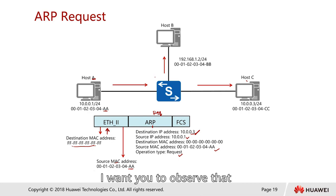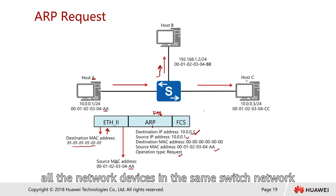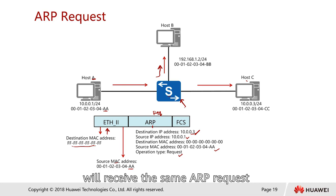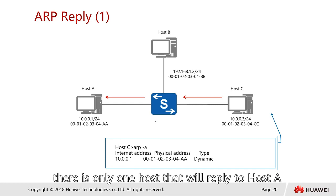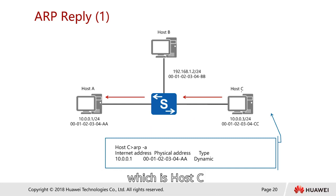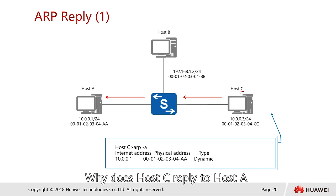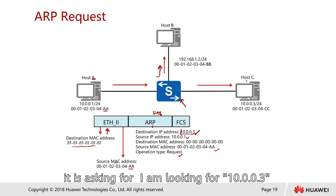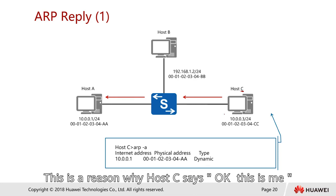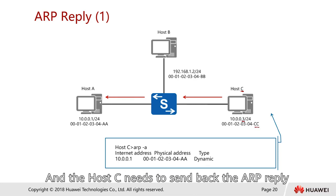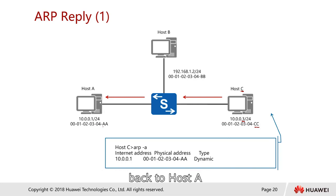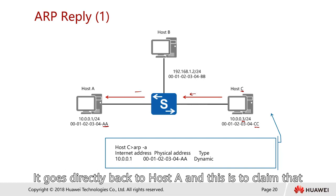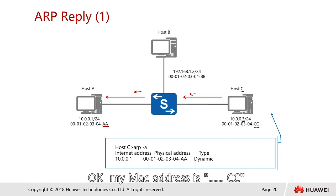Once the packet is sent out, observe that there's traffic going to host B as well. In fact, all network devices in the same switched network will receive the same ARP request. However, only one host will reply to host A - which is host C - because the request is asking for 10.0.0.3, so host C says this is me and sends back the ARP reply directly to host A. It's not broadcast - it's a direct communication.